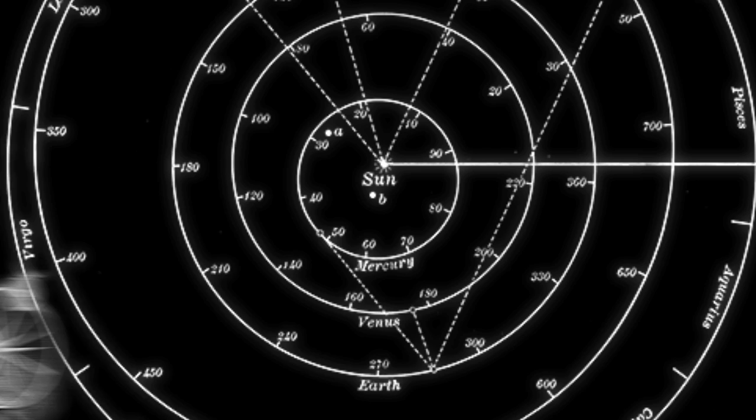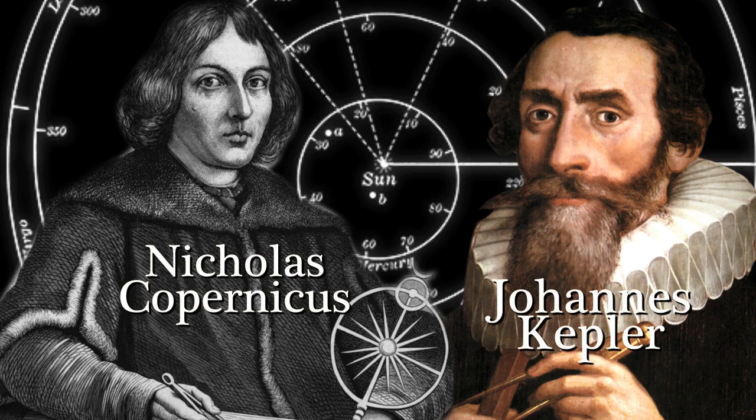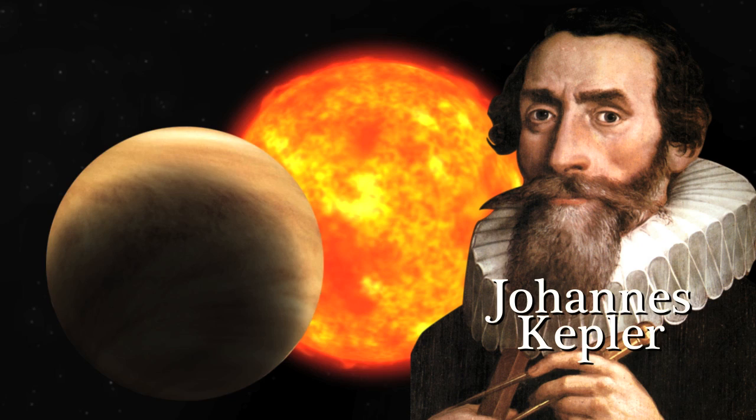Nicholas Copernicus and Johannes Kepler knew that the solar system was large. But how large? In 1619, Kepler figured out that Venus was about 30% closer to the sun than Earth.